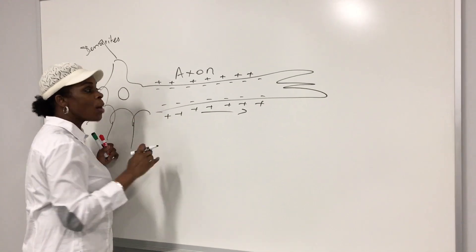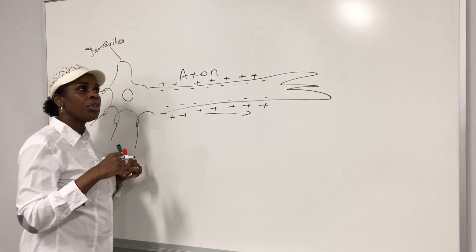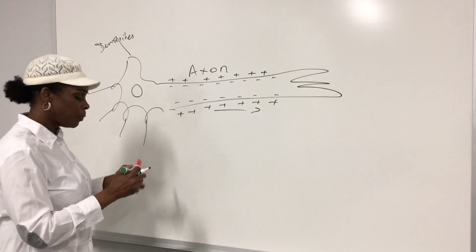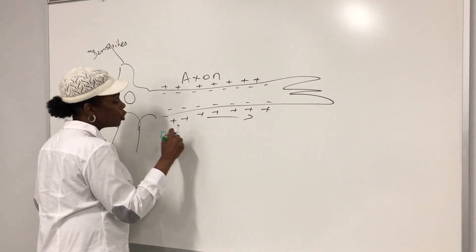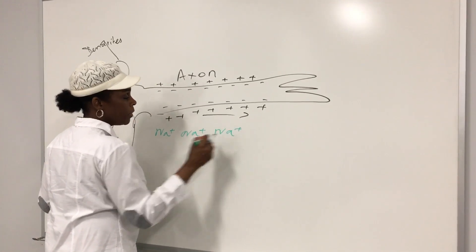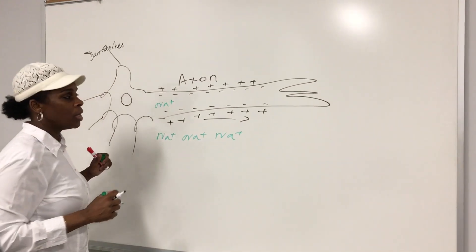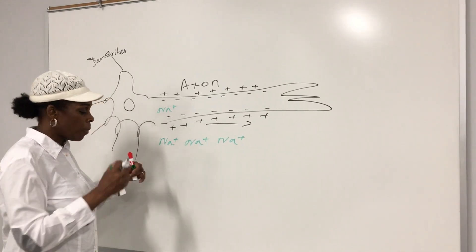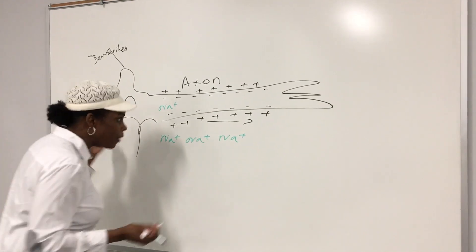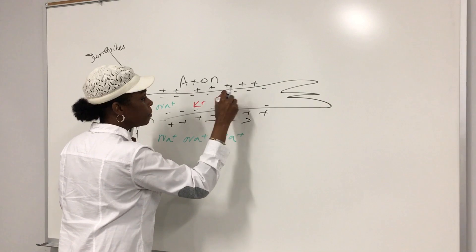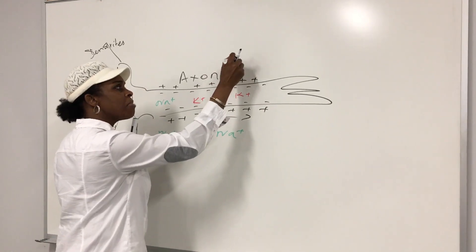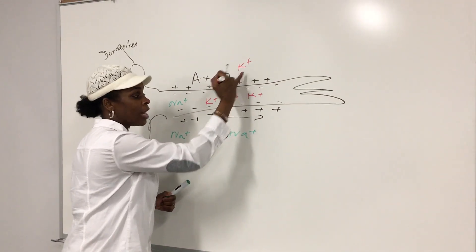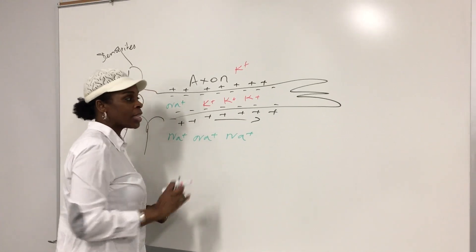Let's talk about the practical things that happen around the cell. First, we have a high concentration of sodium outside and just a low concentration of sodium inside. Also, we have a lot of potassium inside the cell and just a few potassium outside. The concentration of potassium is high inside the cell than outside, and the concentration of sodium is high outside than inside.